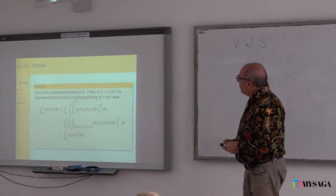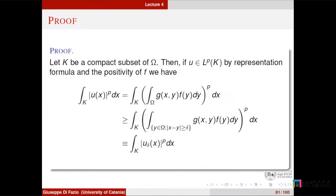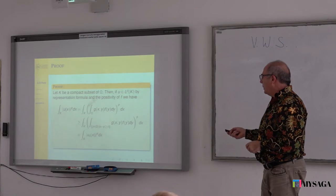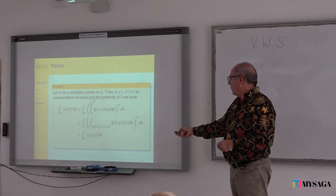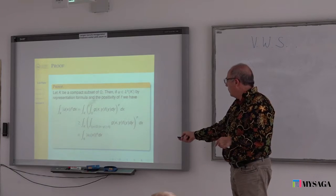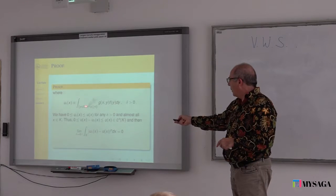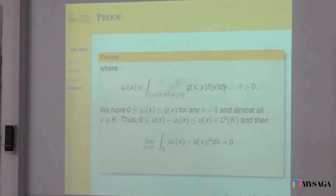We fix a compact set, because the result is going to be local, and use the representation formula. I simply use the representation formula and the estimate for the Green function, so the calculation is very easy. This U-delta, which I will define in a moment, is the integral over the complement of the ball.